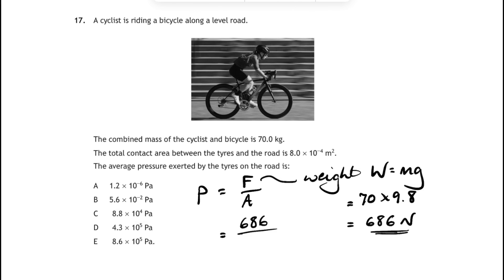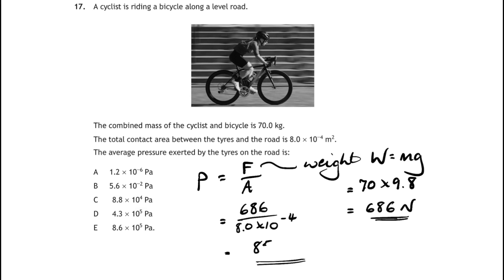Then we're going to divide that weight by the area, 8 times 10 to the minus 4. If you do the arithmetic correctly, you get 857500, and that rounds to 8.6 times 10 to the 5 pascals. So that's the right answer, 8.6 times 10 to the 5, that's answer E.